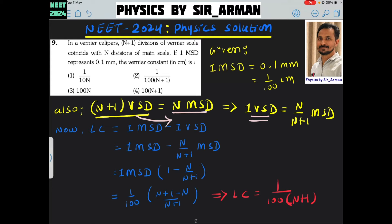Now, to find least count — vernier constant means least count. To find least count, the equation is: least count equals 1 main scale division minus 1 vernier scale division.